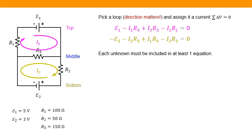We're going to try and make sure that there is at least each unknown in our equation. In this case, I1 and I2 is in at least one equation.